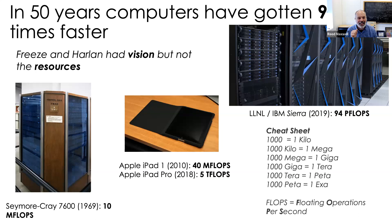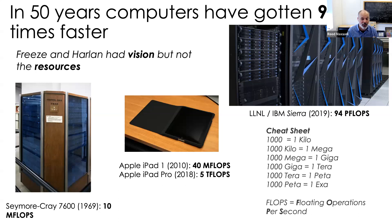In 50 years, computers have gotten 9×10⁹ times faster. The Seymour Cray 7600 in 1969 was a 10-megaflop machine; Sierra/Lassen combined is 94 petaflops. A kilo is 1,000, a mega is 1,000 kilos, a giga is 1,000 megas, a tera is 1,000 gigas, a peta is 1,000 teras, and now we're talking about exa, which is 1,000 petas. An average smartphone is in the megaflops to teraflops range. So Freeze and Harlan had this vision, but they didn't have the resources.